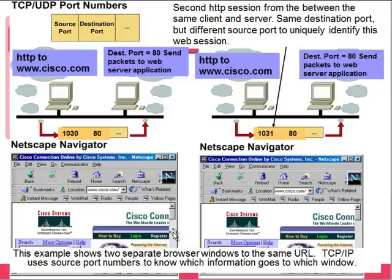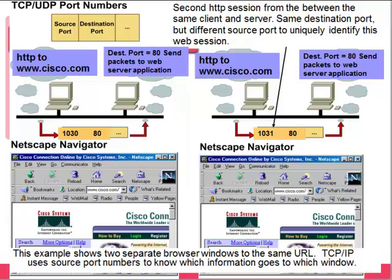Consider having two web browsers open. Both communicate on the web using port 80. In this example, Cisco's website is open in both browser windows — same page, same computer, same application. If you click a link in one browser, how does the computer know which browser window to open it in? That's where the source port comes in. Even though both are going to port 80, one originates from source port 1031 and the other from port 1030. We use the source port and destination port in combination to know where we're coming from and where we're going.